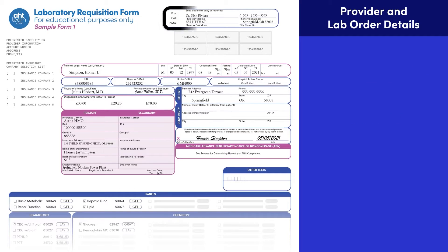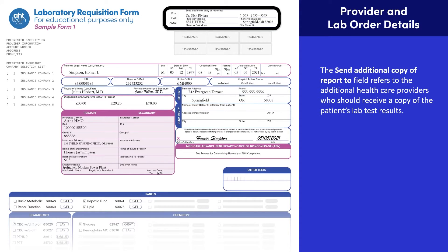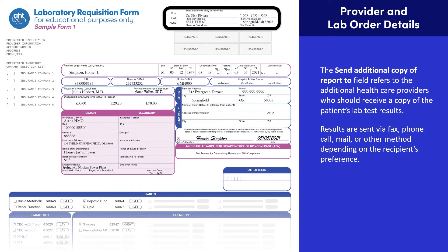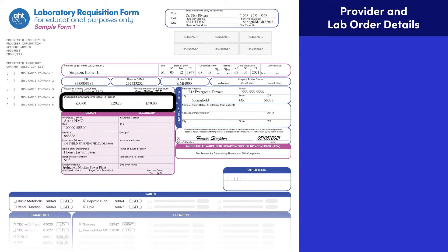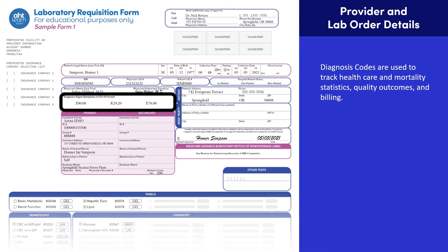The Send Additional Copy field refers to the additional health care providers who need to receive a copy of the patient's lab test results. Results are sent via fax, phone, mail, or other method depending on the recipient's preference. The International Classification of Diseases Code Set, such as the ICD-10-CM, is for diagnostic purposes under HIPAA. It is used to track health care and mortality statistics, quality outcomes, and billing. The diagnosis field refers to the reasons why the doctor ordered the tests, and those reasons must be entered on the form in the correct ICD code format.